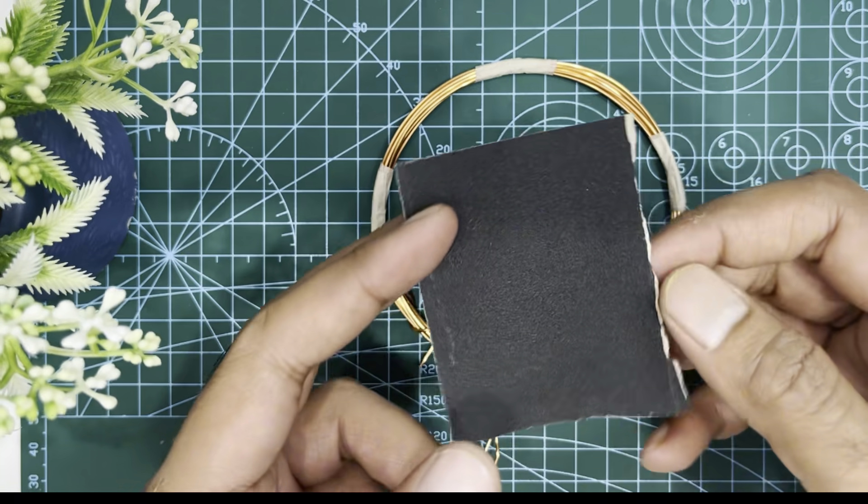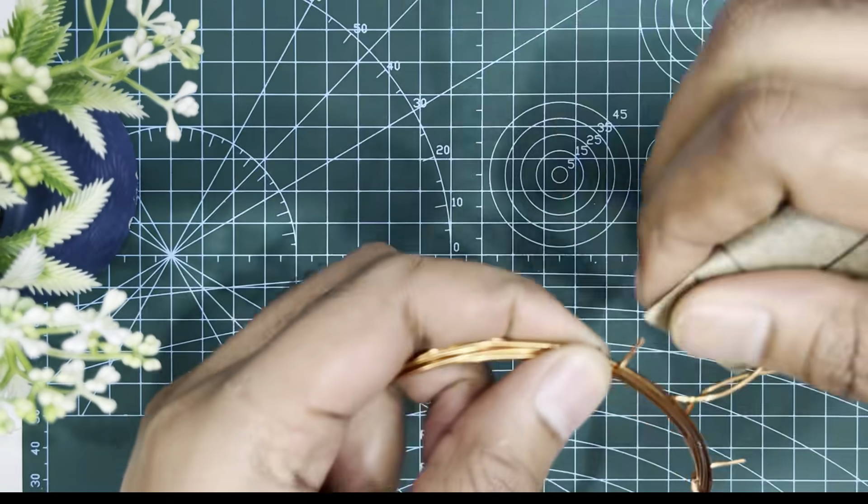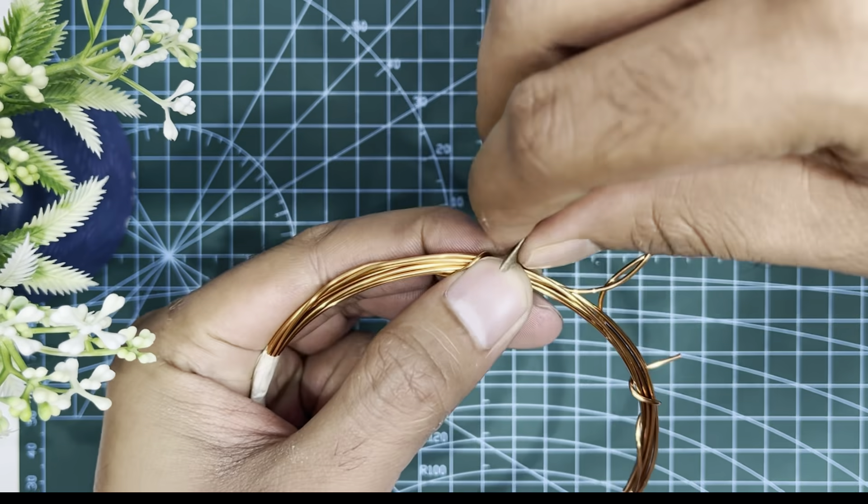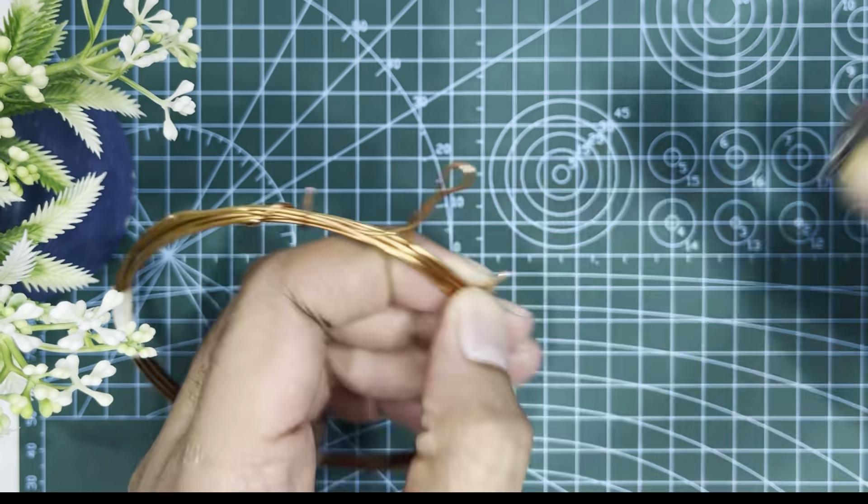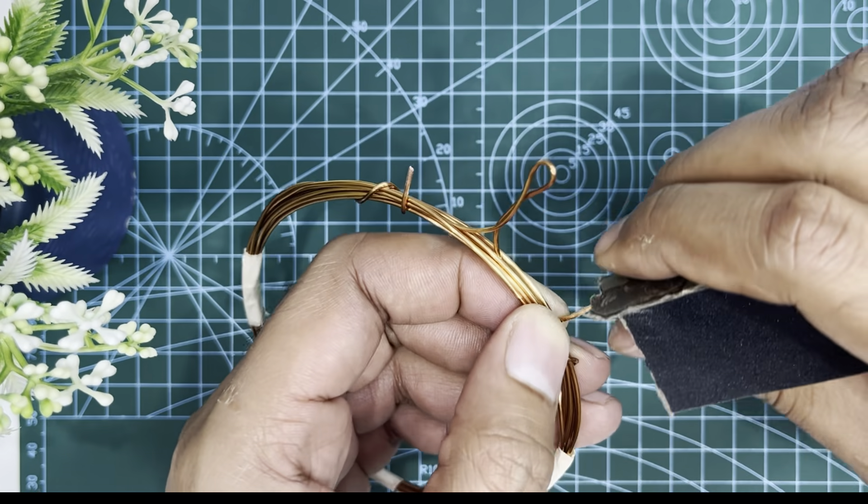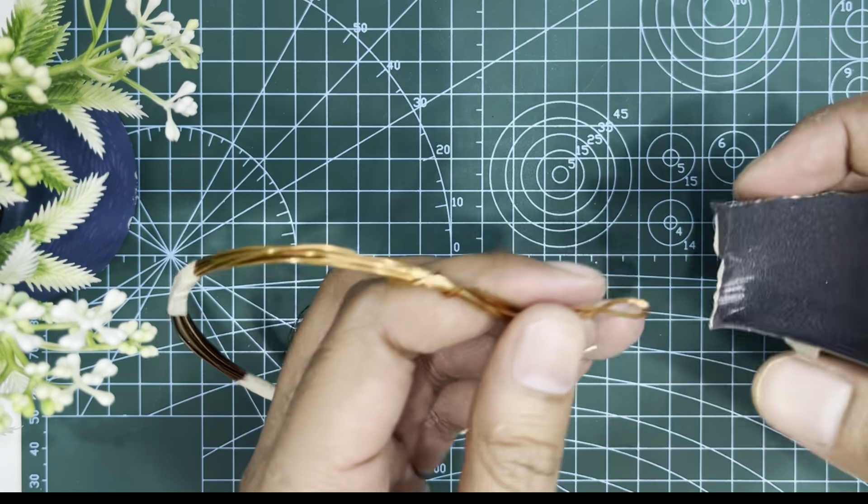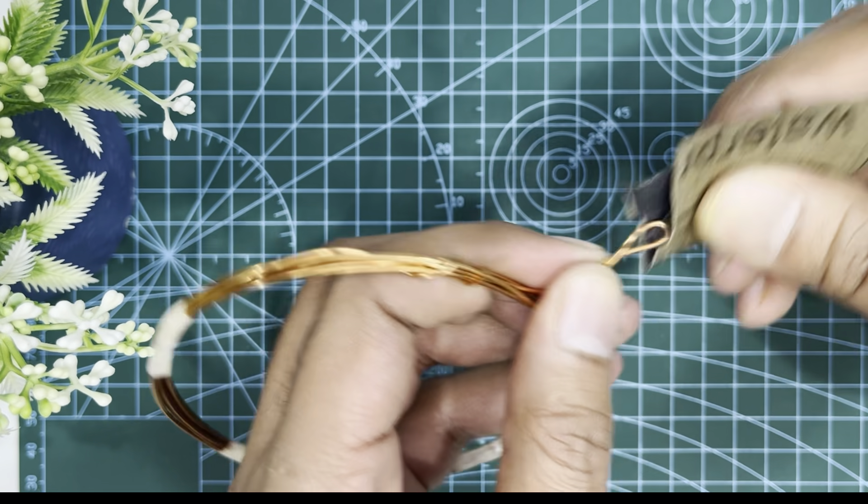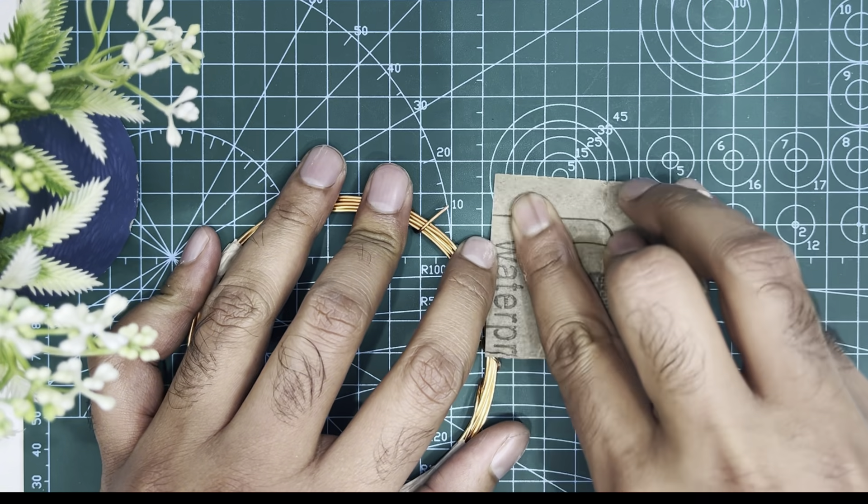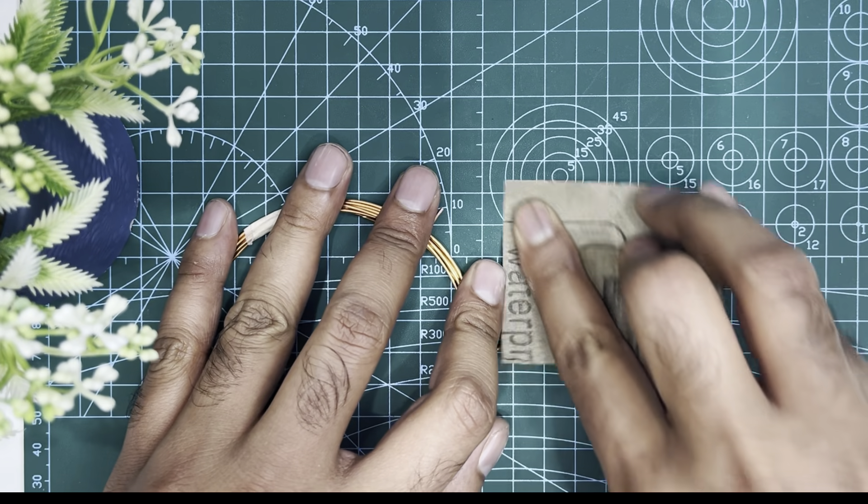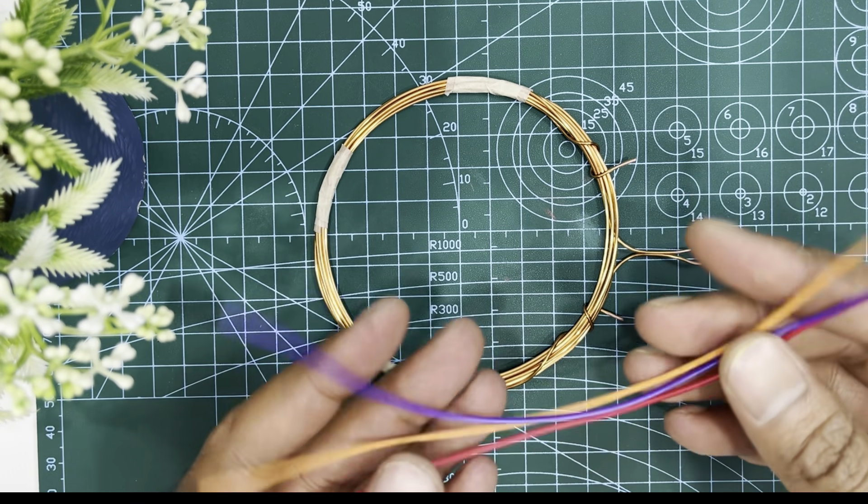Now I am using sandpaper to remove insulation from both ends of the coil. So we need to remove insulation from the center loop of the coil. After finishing removing insulation, take 3 wires.